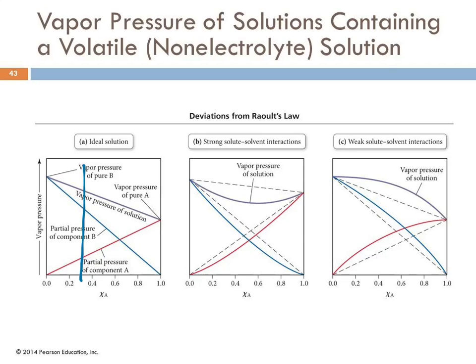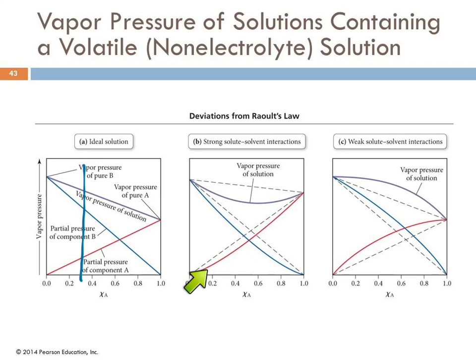When there are strong interactions between solute and solvent, the vapor pressure curves sag below ideal behavior—the molecules are held by the other component and don't vaporize as easily. Both components show lower vapor pressure than expected. Equal amounts of A and B in moles give the maximum interaction and the lowest total vapor pressure for the solution.